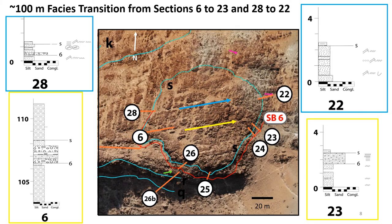At certain locations within the canyon fill we observe downflow facies transitions on the meter scale. In the Mucca Baluna incision, blue and yellow arrows show paleocurrent directions from corrected flute marks flowing to the right. In section 28 we see a thin bed of pebble to cobble conglomerate that transitions, on roughly the 100-meter scale downflow to section 22, into tabular beds of rippled sand and silts. Similarly, section 6 shows roughly 2 meters of pebble to cobble conglomerate transitioning on the ~100-meter scale downflow to section 23, which is a much thinner bed of pebble sandstone.